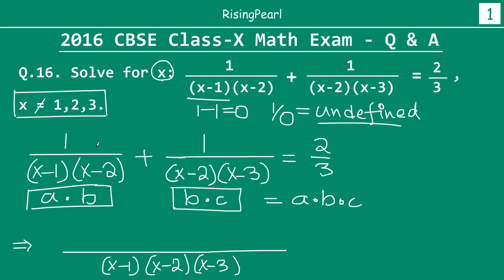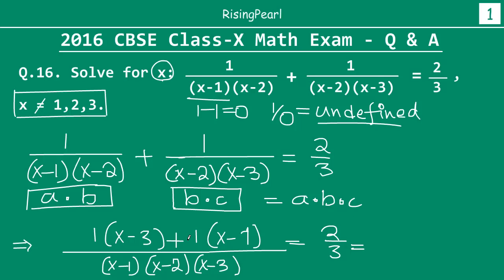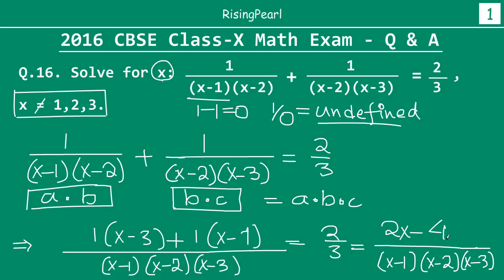Writing the equation over a common denominator (x−1)(x−2)(x−3): the first fraction contributes 1×(x−3) and the second contributes 1×(x−1). Solving the numerator: x plus x is 2x, and −3 minus 1 is −4, so the numerator is 2x−4. The full expression is (2x−4) divided by (x−1)(x−2)(x−3), and this equals 2/3.